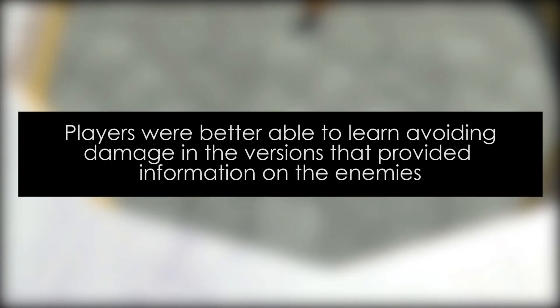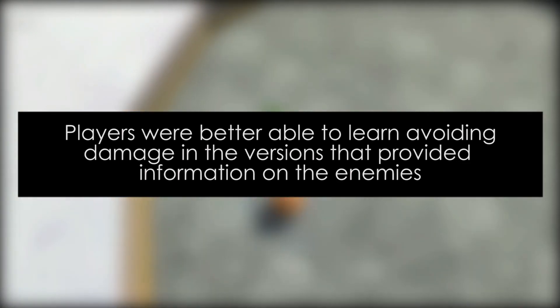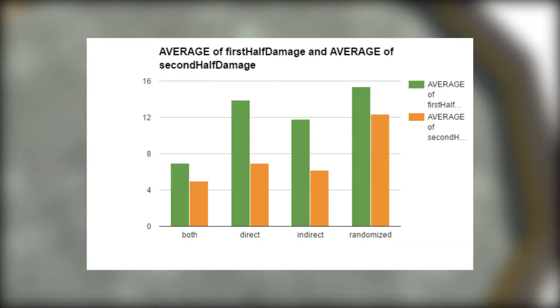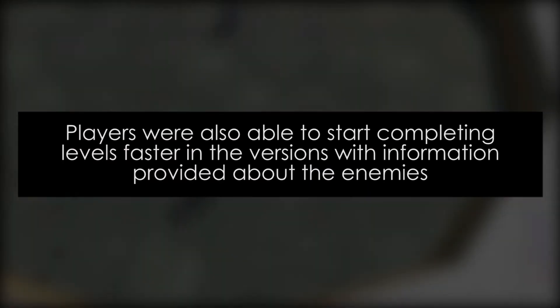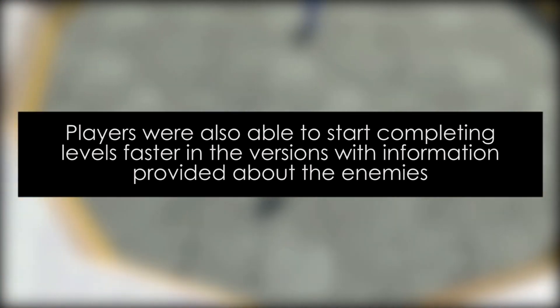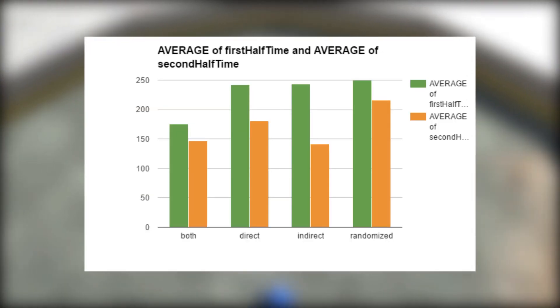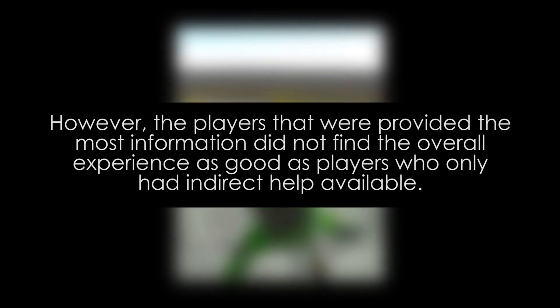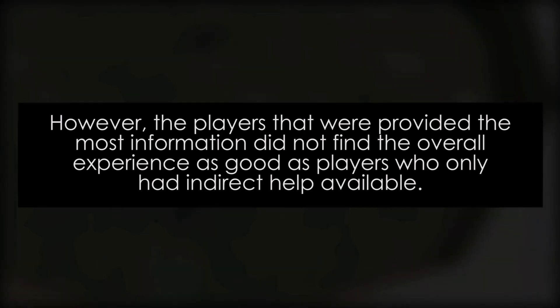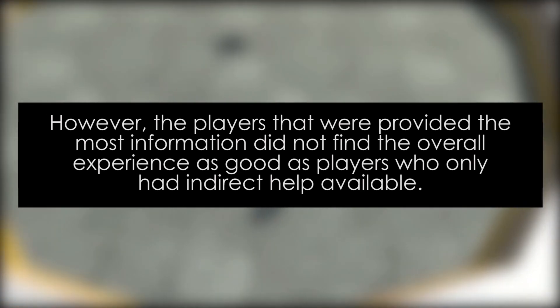Following a test on 84 participants, the results were analyzed, and we found that players were better able to learn avoiding damage in the versions that provided information on the enemies. Players were also able to start completing levels faster in the versions with information provided about the enemies. However, the players that were provided the most information did not find the overall experience as good as players who only had indirect help available.